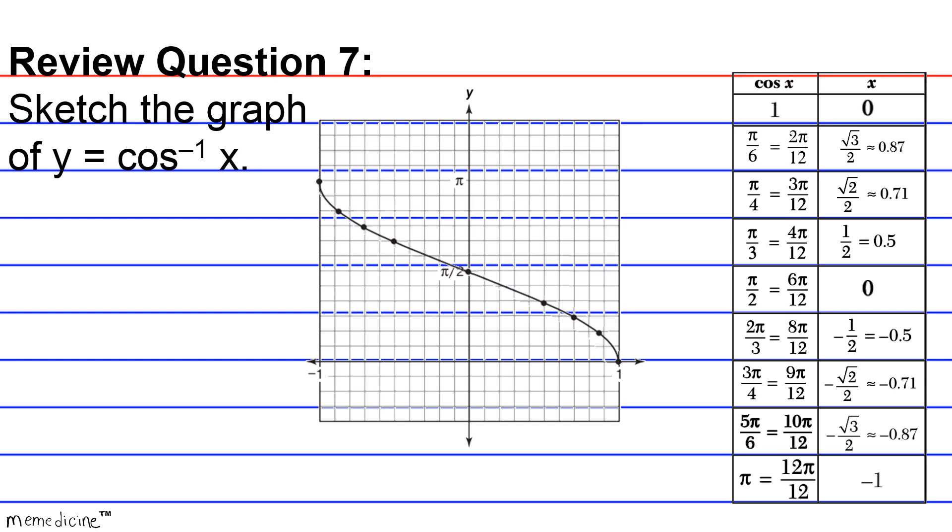So after you do all that, this is what your graph should look like. The input is going to be the cosine, and the output is going to be the inverse cosine of x, or the angle measurement. The angle measurement that corresponds to its specific cosine value. I hope I didn't trip you up too much. If I did, sorry. But another good thing is that you can use your calculator to solve this. Or you can use your calculator to check your work, rather. So let's see how this is done.